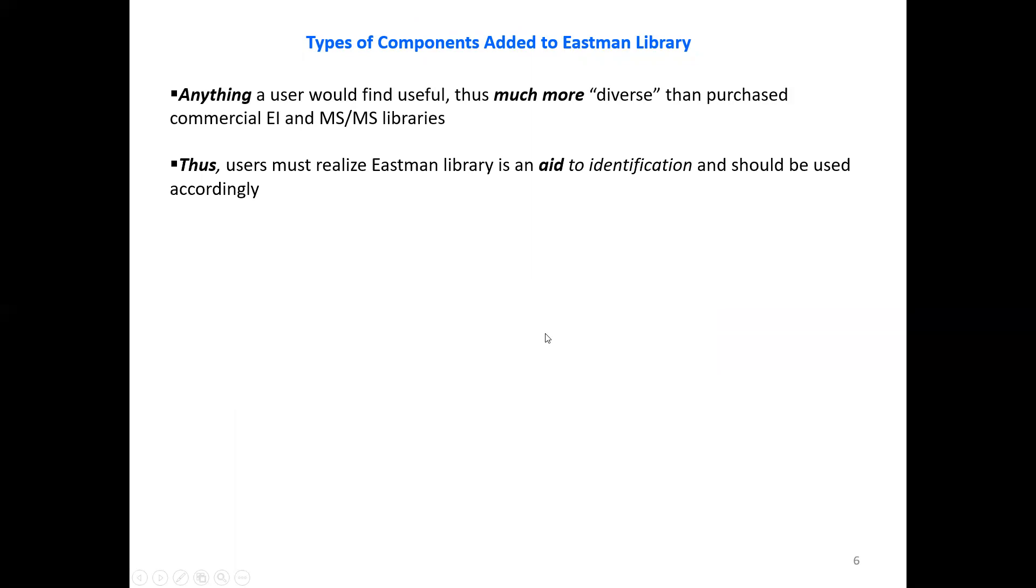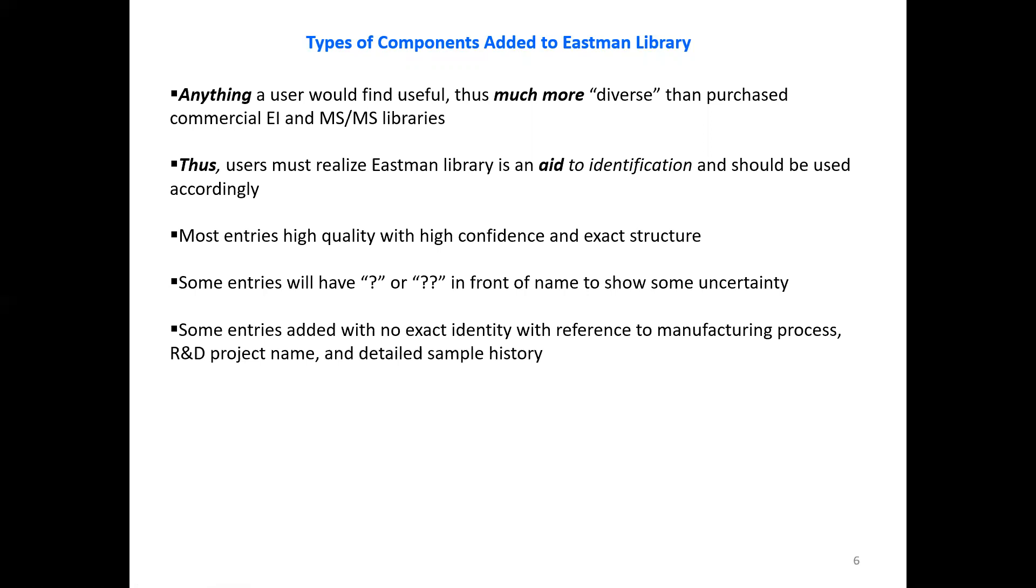So what types of compounds do we add to the Eastman library? Anything a user would find useful, thus much more diverse than purchased commercial EI and MSMS libraries. Those users must realize that Eastman library is an aid to identification and should be used accordingly. Most entries are high quality with high confidence and exact structure. However, some entries will have a question mark or double question mark in front of the name to show some uncertainty. Some entries, when added without a structure or a name, will be added a reference to manufacturing processes, R&D project names, and detailed sample history.